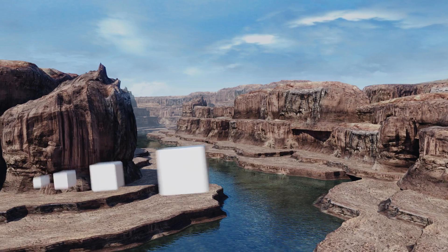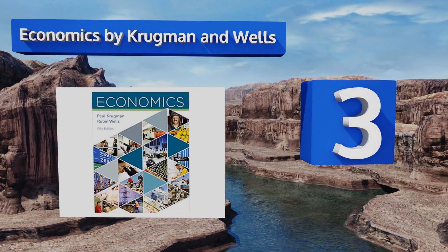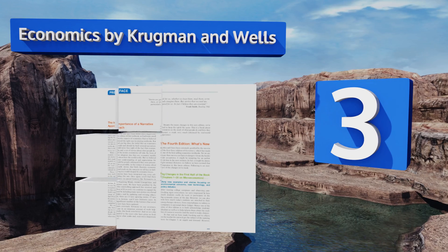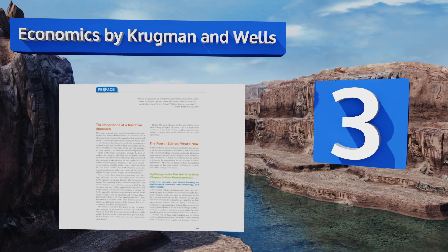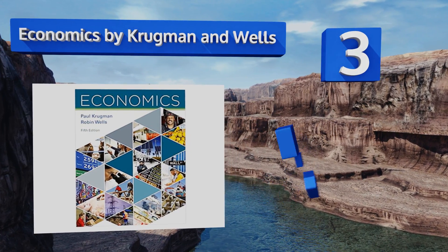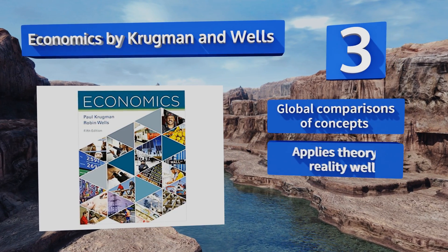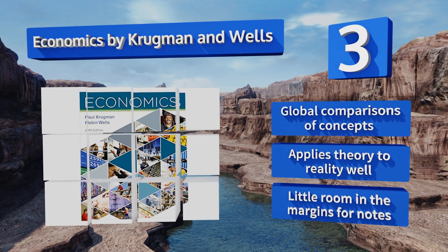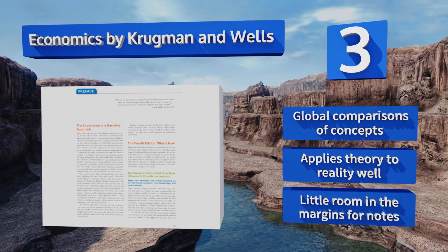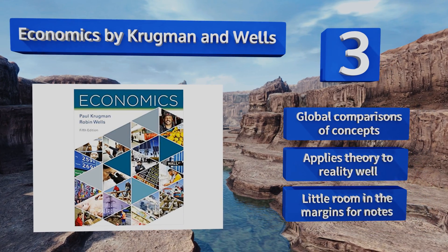Nearing the top of our list at number 3, a staple of freshman courses, Economics by Krugman and Wells provides a very current and insightful presentation of elementary macro and micro fields. It's written in a way that instructors with all sorts of teaching styles find easy to communicate to their students. It features global comparisons of concepts and applies theory to reality well, but there's little room in the margins for notes.